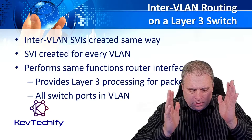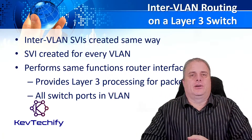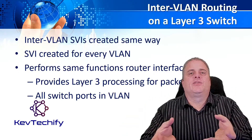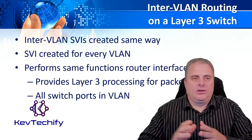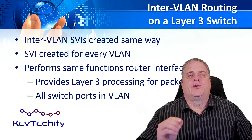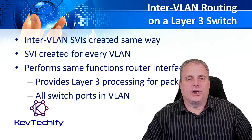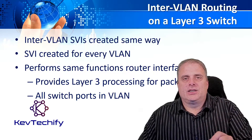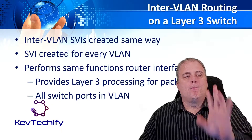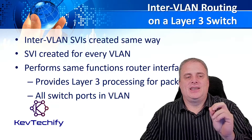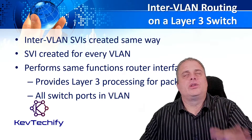When we talk about layer 3 switches, a layer 3 switch combines a layer 2 switch and a layer 3 router together. It gives you all in one chassis — the functionality in one device instead of having two separate devices. When we set up inter-VLAN routing on a layer 3 switch, we have to create a switch virtual interface. Those switch virtual interfaces are created the same way that we create them on a layer 2 switch.